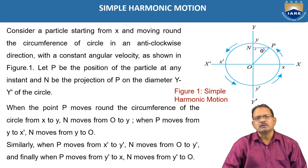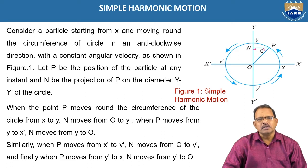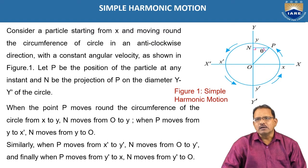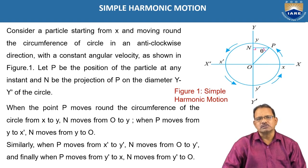Let us consider a particle which is moving along the circumference of a circle of radius as shown in figure, with uniform velocity. Let P represent the position of the particle after time t. Draw the projection of point P on the vertical diameter of the circle. The end point represents the projection of point P. When the particle is moving along the circumference of the circle from X position to Y position in counter-clockwise direction, its projection when viewed from the right side is projected on the vertical diameter.